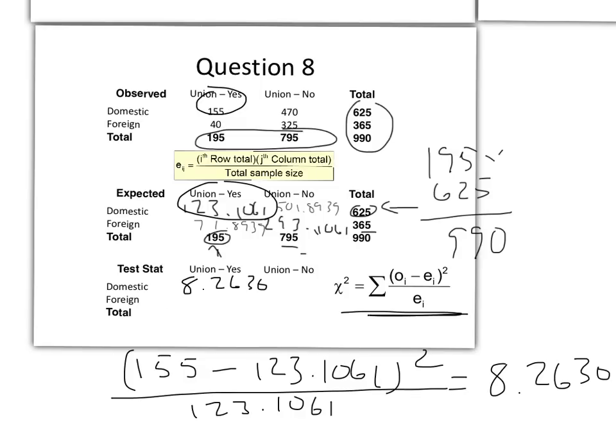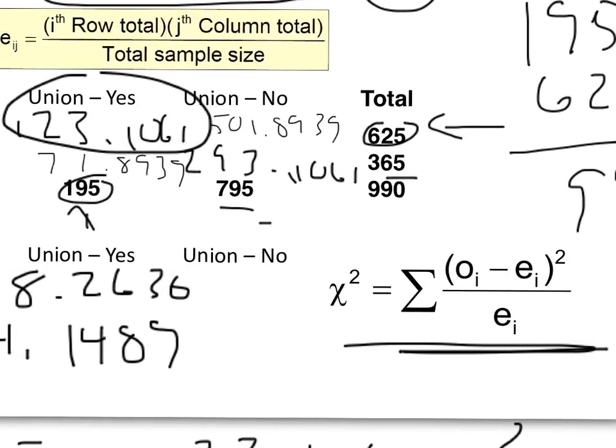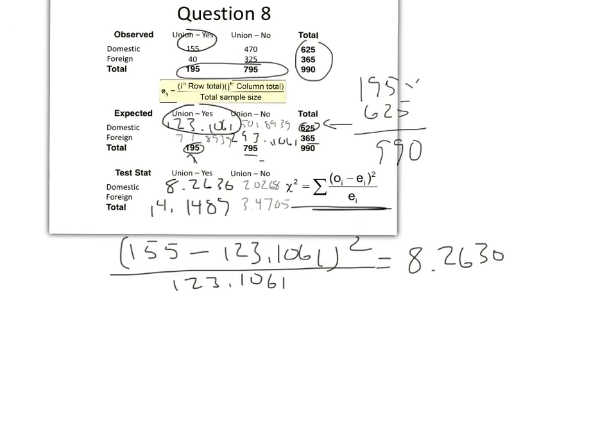And then we would do this three more times now and then sum those up. So we get 14.1489. I did that by 40 minus 71.8939 squared over 71.8939. And then on this next one in the upper right, I get 2.0268. And then we get 3.4705. Let's zoom out a little bit here. These results, just to recap, because I probably went through that kind of quickly.